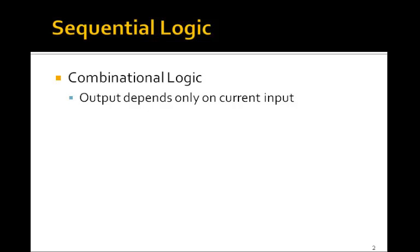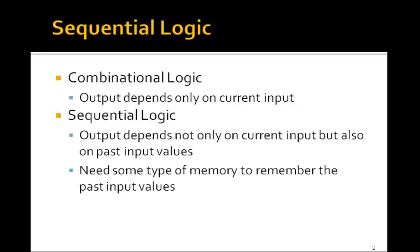So far, all of the circuits that we've designed have been combinational circuits, in which the output depends only on the current input. For example, in your multiplexers, adders, subtractors, or decoders, whenever you change the input, the output changes. However, in sequential logic, the output depends not only on the current input, but also on past input values. Therefore, we need some type of memory to remember these past input values.